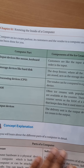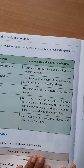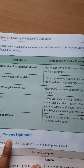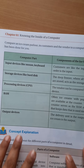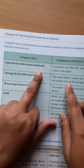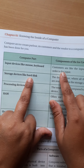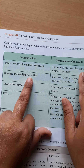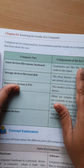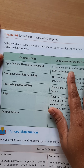Now we will see another comparison — computer parts and components of an ice cream parlor. Input devices like mouse and keyboard are compared here. Customers are like the input devices, and the order is the input.